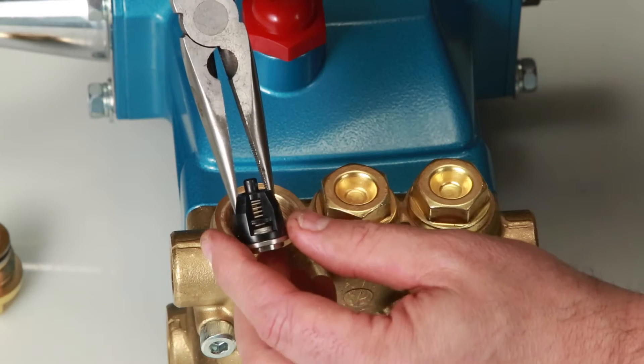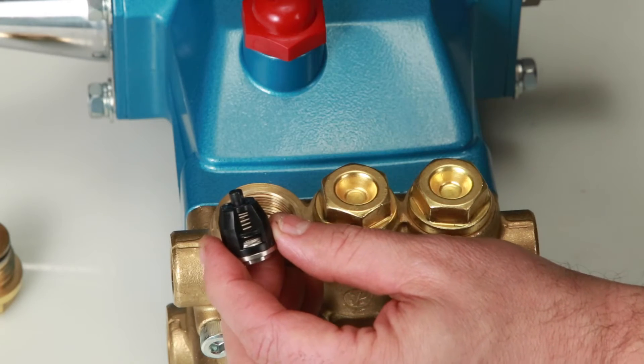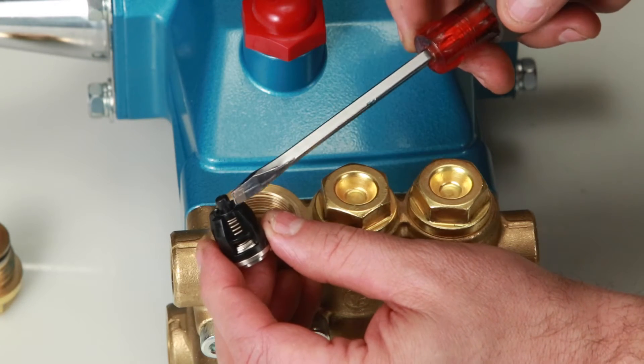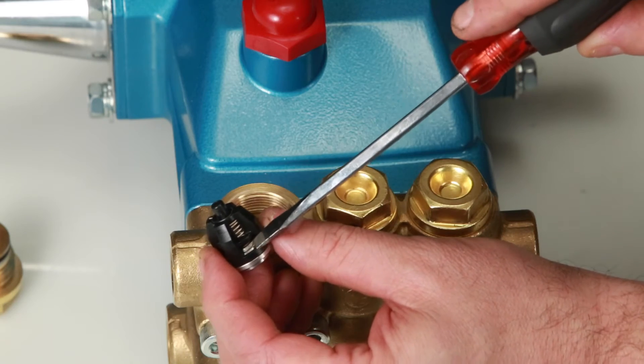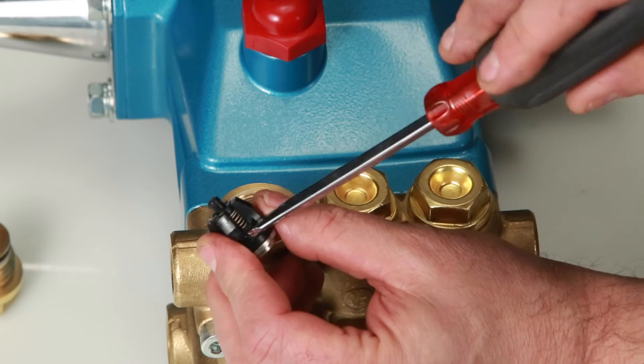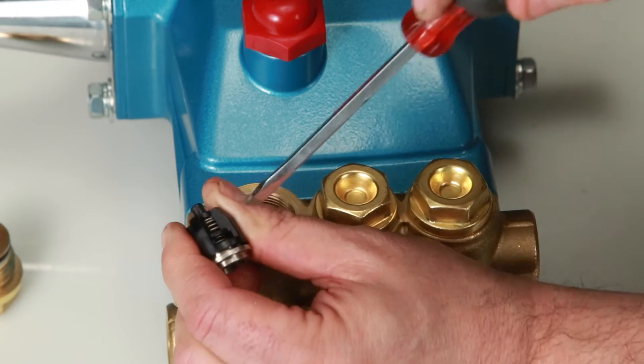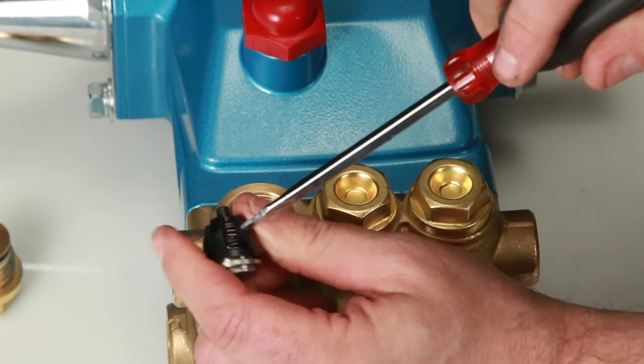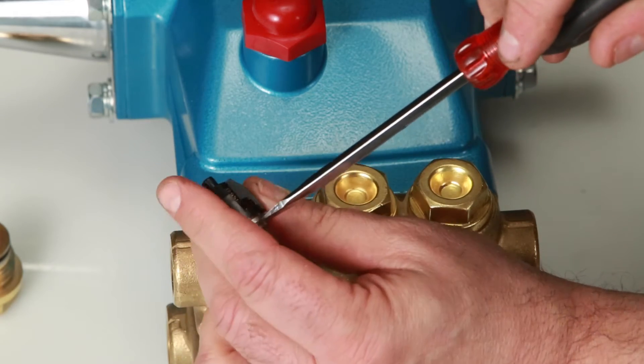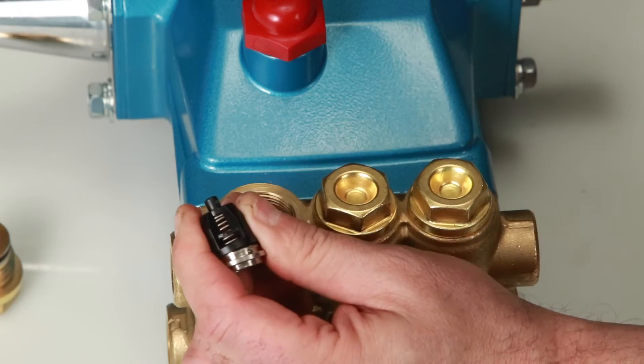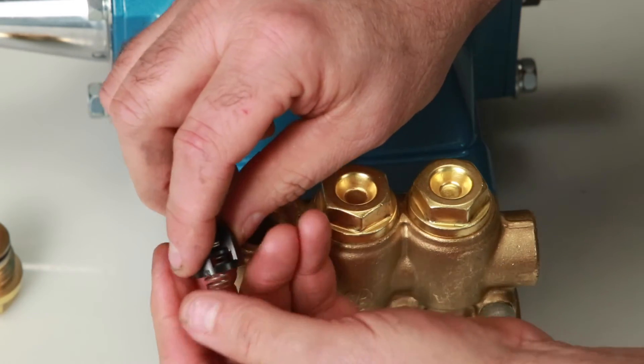If the valves are going to be reused, serviced, or inspected, the assembly can be dismantled. Start by inserting a flat-tip screwdriver through the spring retainer just above the valve and twist to create a small gap between the valve retainer and valve seat. Place flat-tip screwdriver in the gap and twist to completely separate.